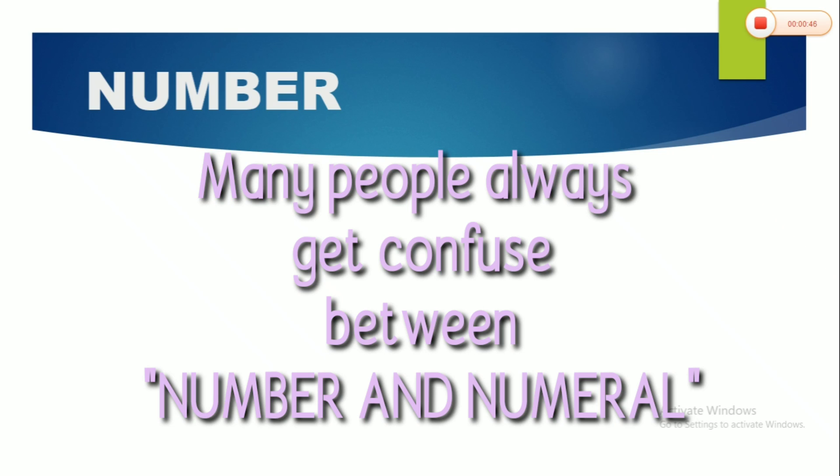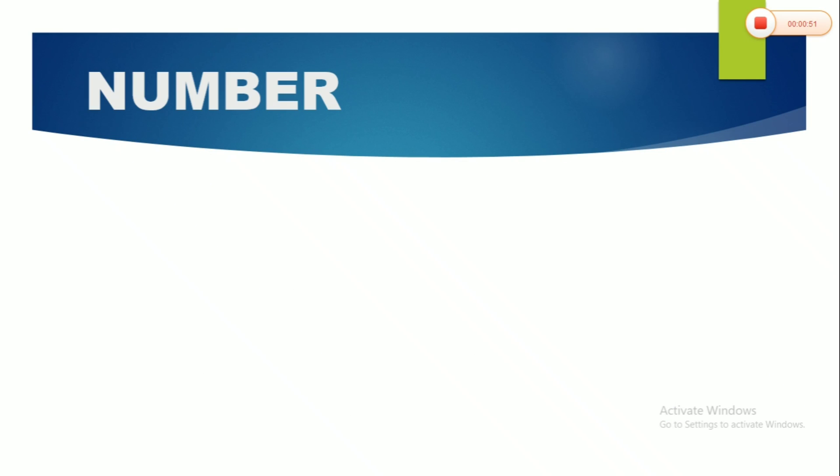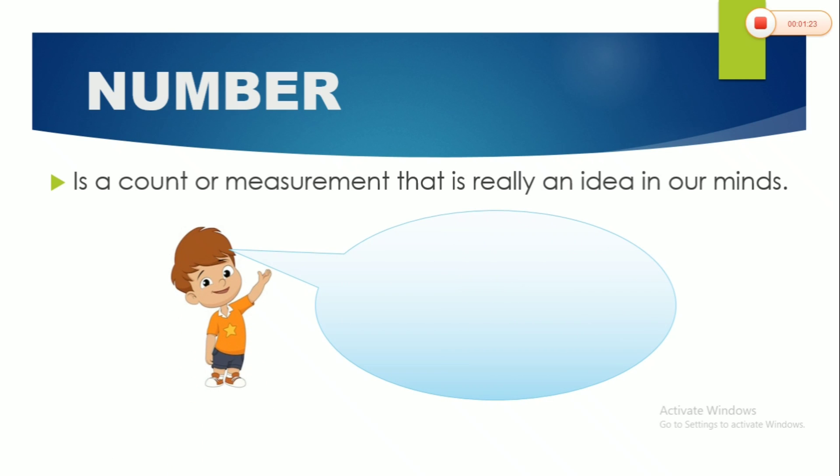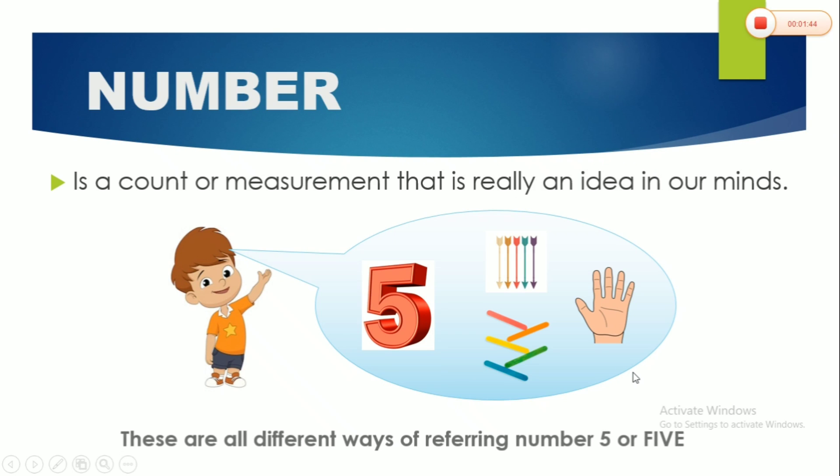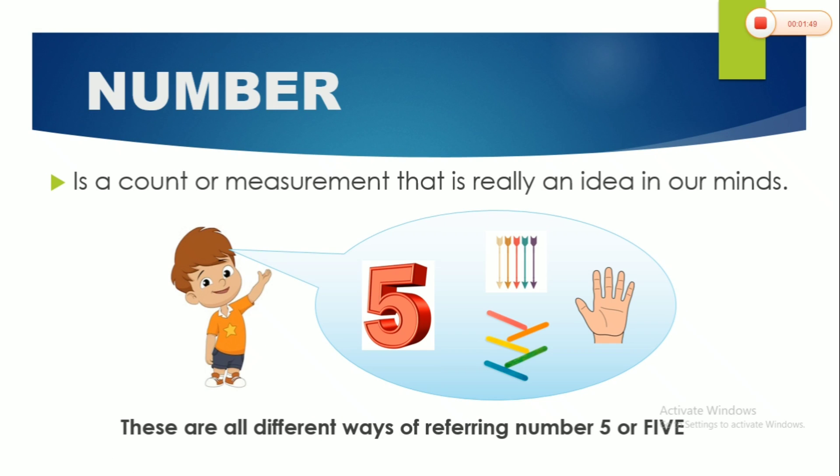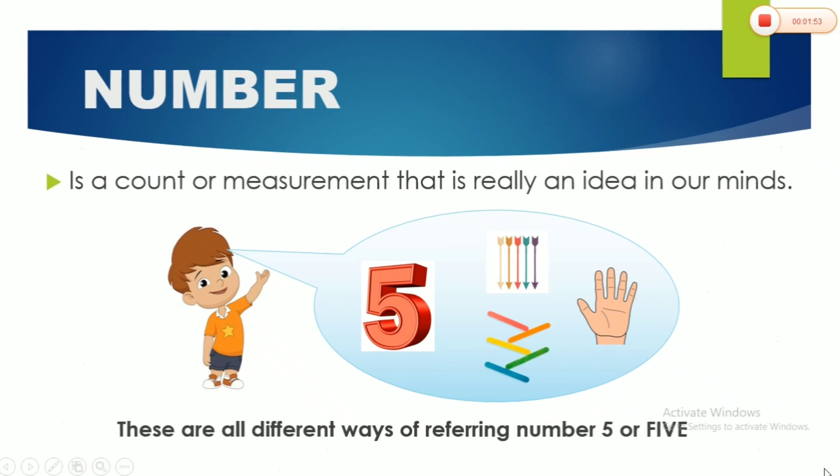First, what is number? Actually, this is the meaning of number. Number means a count or measurement that is really an idea in our minds. Yes, you're correct. So when we say five, it can be used for different things. It can be five itself, or five arrows, or five fingers, or even five sticks. So this thing here represents five. Now, these are all different ways of referring to the number five. It can be a word as well. So that is number.